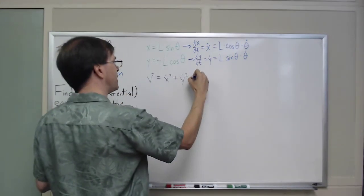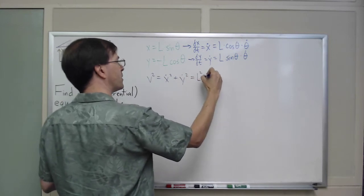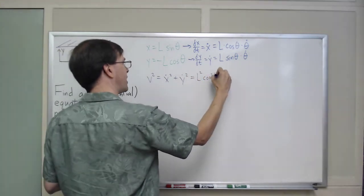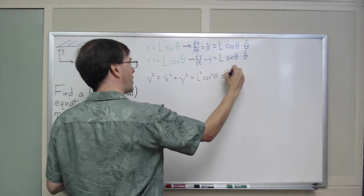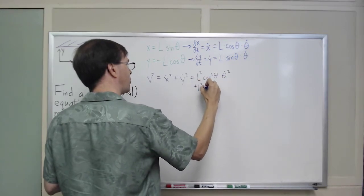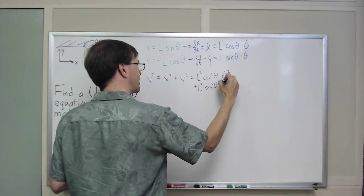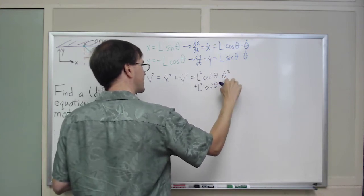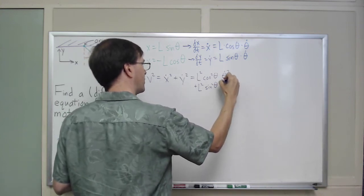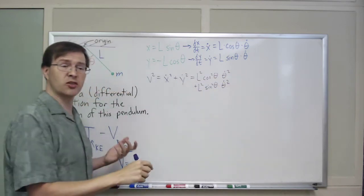That's what speed is. This is the Pythagorean theorem for speed. So, that's going to be L squared cosine squared theta theta dot squared plus L squared sine squared theta times theta dot squared. That's a squared, really. Theta dot squared.